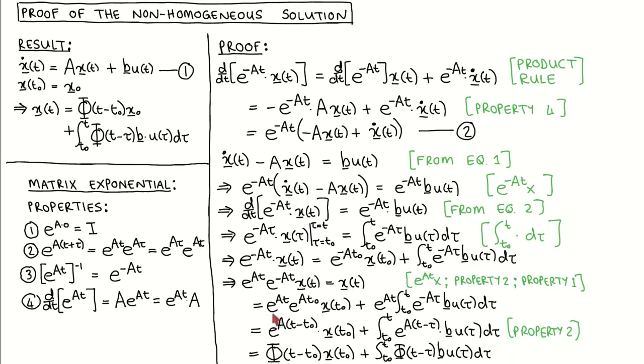The right-hand side becomes this. We now combine the matrix exponentials in the first term using property 2. We move the matrix exponential of At into the integral, since it is a constant matrix with respect to the integration variable tau, and combine the matrix exponentials within the integral using property 2.